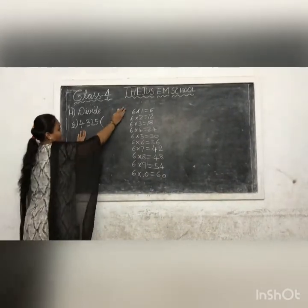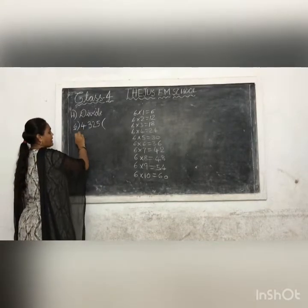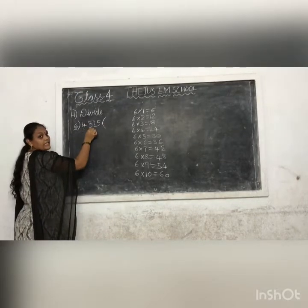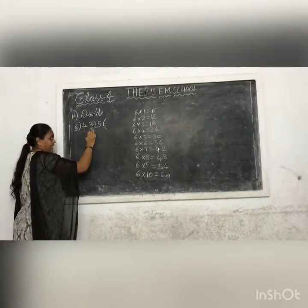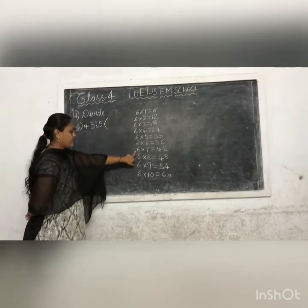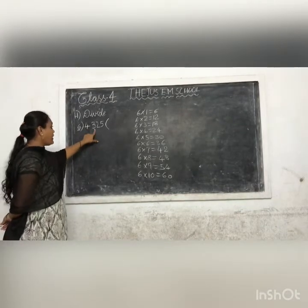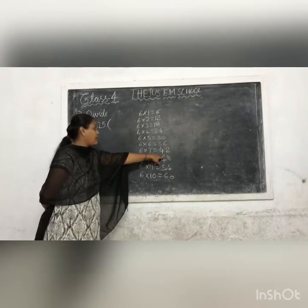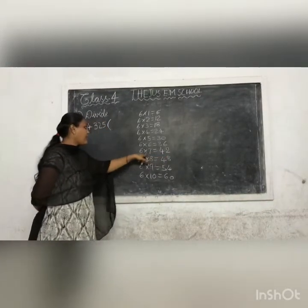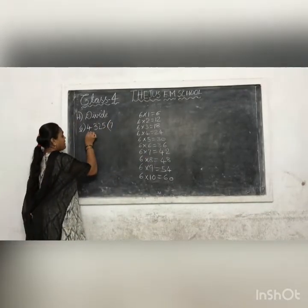In the 6th table, the first number 4 is not divisible by 6, so we will see the 2-digit number 43. Is 43 divisible by 6? No. So the number before is 42, which is 6 times 7 equals 42. So we write 6 times 7 equals 42. How many times? 7 times. So 7 times 6 equals 42.